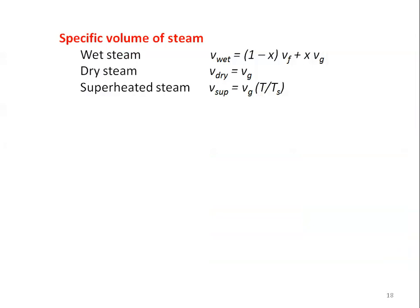Before we take the problem to solve, we review the equations required. First, the specific volume of steam. For wet steam: V_wet = (1 - x)·Vf + x·Vg. Since Vf is very small, we ignore it, so V_wet = x·Vg. For dry steam: V_dry = Vg, directly available in the steam table. For superheated steam: V_super = Vg·(T/Ts), also available in table number 4 of the steam table.